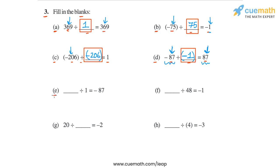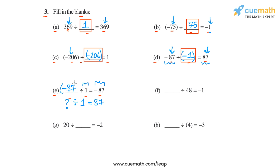Then in part e, we have blank divided by 1 is equal to minus 87. Ignore the negative sign for a moment and think about what integer when divided by 1 gives us 87. That integer is simply 87. Then we see that the quotient is negative and the divisor is positive, so the dividend must be negative. So in part e, the answer is minus 87.